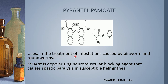Pyrantel pamoate is used in the treatment of various helminthic infestations caused by pinworm and roundworm. The mechanism of action is that it is a depolarizing neuromuscular blocking agent, causing spastic paralysis, affecting the complete contraction and relaxation of the muscles of the parasitic worm in susceptible helminthes.